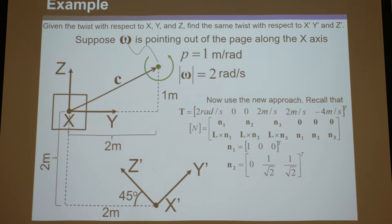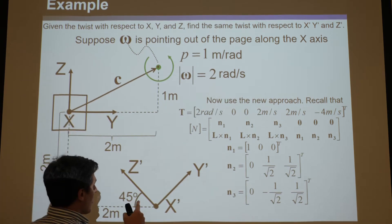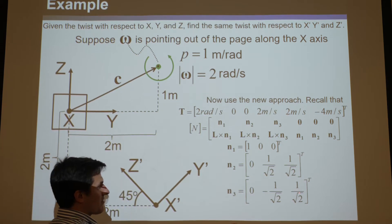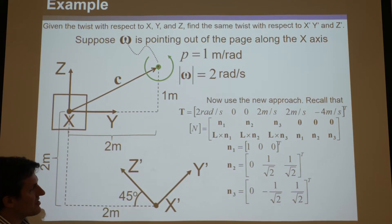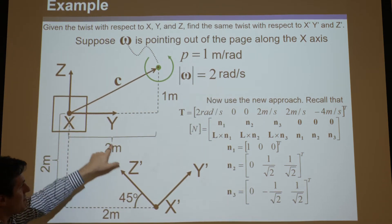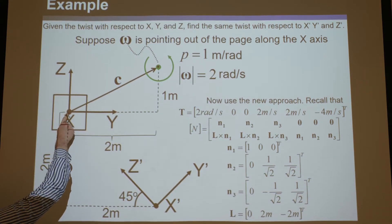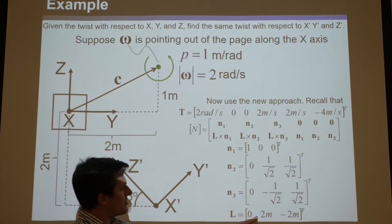It's very important — these are unit vectors with magnitude 1. n3 with respect to the old system is similar: [0, -1/√2, +1/√2]. So now we've found our three unit vectors with respect to the old system that point in the directions of the new coordinate system. We also need to find the L vector pointing from the old coordinate system to the new one, which is [0, 2m, -2m] — 2 over and 2 down.